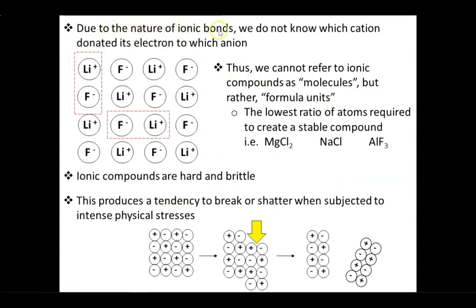Now due to the nature of ionic bonds, we do not know which cation donated its electrons to which anion. So this lithium cation, we don't know if it donated its electrons to this fluorine, this fluorine, this fluorine, or this fluorine. We don't know, and in the end it really doesn't matter. But because we don't know which pair of atoms were originally involved with the original exchange of electrons, we cannot refer to them as molecules. Instead you're going to call them formula units, which is defined as the lowest ratio of atoms required to create a stable compound.